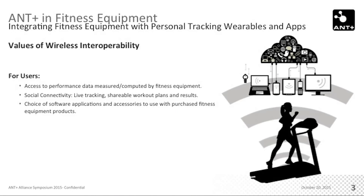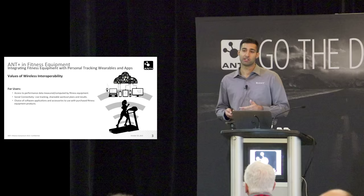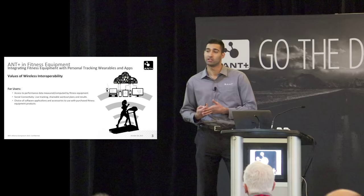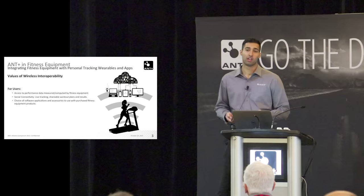Just the values of wireless interoperability for users: going through what users get out of having data from their fitness equipment devices available on their devices. First, they get access to everything measured and computed by their devices — treadmills, stationary bikes, bicycle trainers — how they're doing in terms of fitness, how their performance is, and what they can improve on based on those parameters.